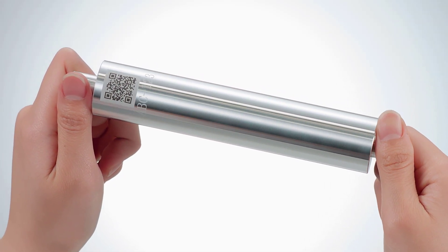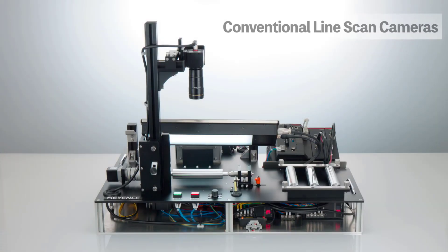With conventional line scan cameras, this cylinder's circumference can be unwrapped for consistent imaging around the part.